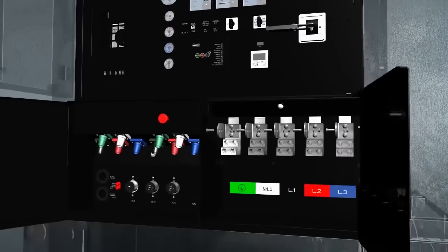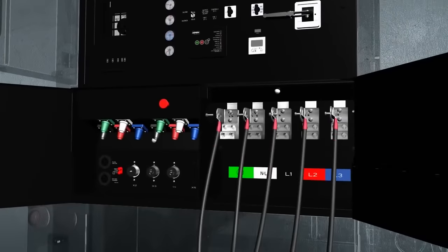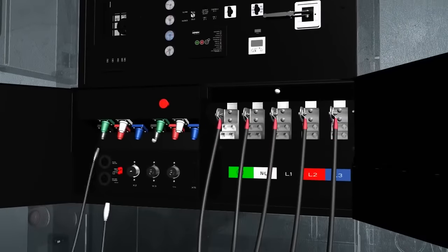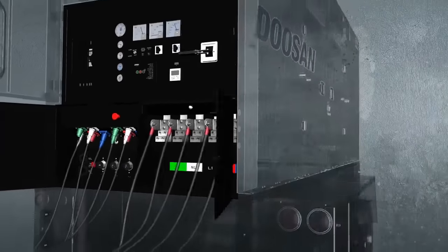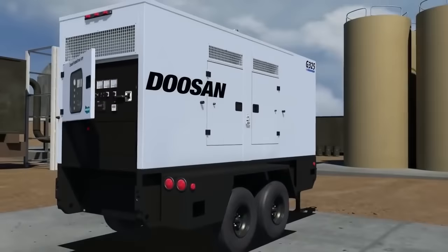Once power reaches the connection panel, operators can attach power cables to the generator's terminal board, receptacle panel, or cam lock panel, transforming electrical energy into light, heat, or motion, providing the power we rely on every day.